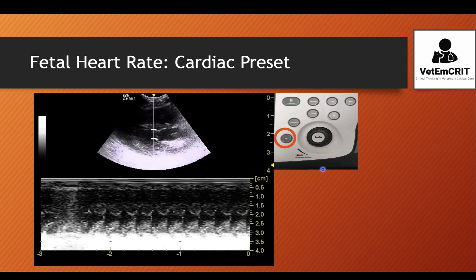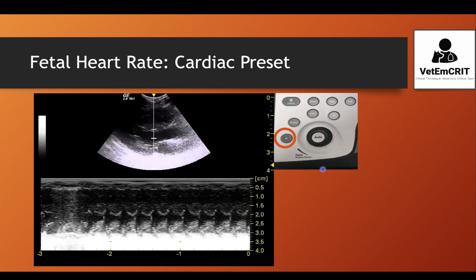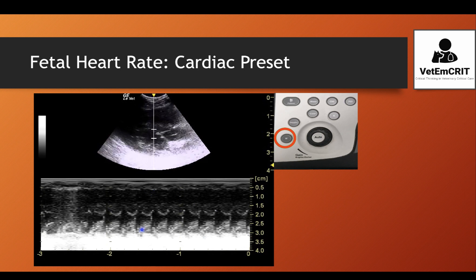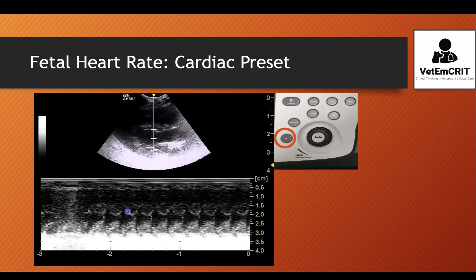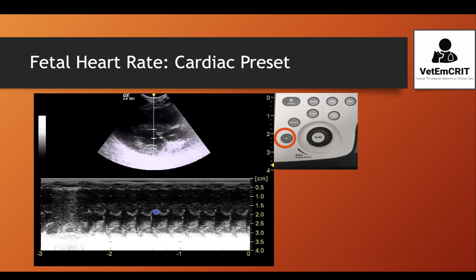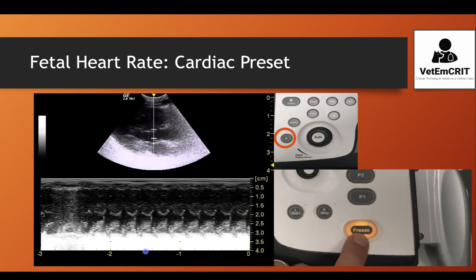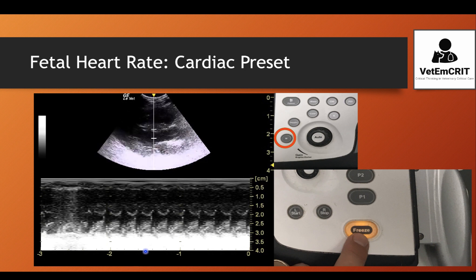M-mode stands for motion mode — it allows an operator to evaluate motion in a still image, as depicted on the bottom picture. Once you turn on M-mode, you want to put the cursor across the heart so that you can see different phases of the heartbeat in M-mode below. Next, freeze your image so that you can assess the heart in M-mode as a still image.